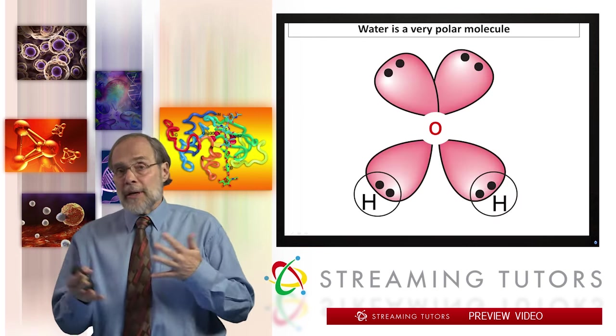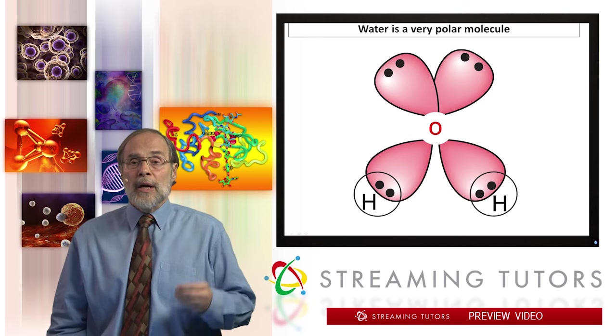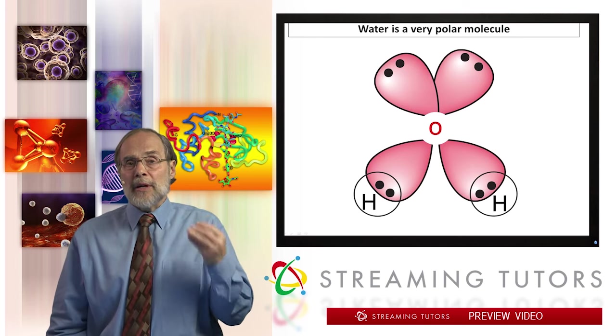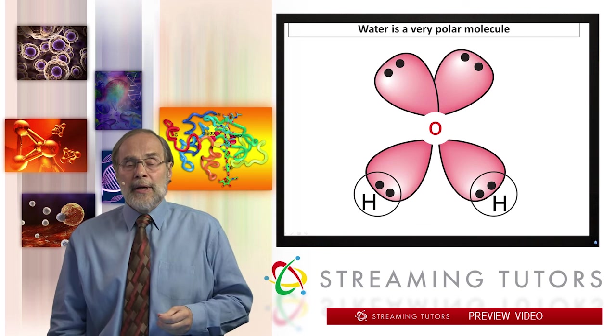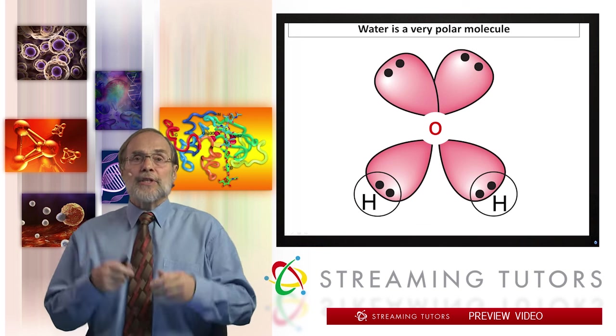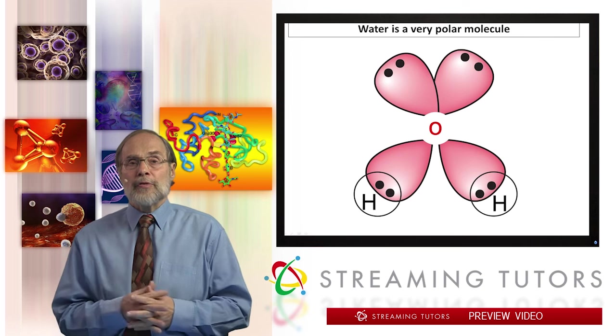So this is a step toward a ball and stick model. This is a water molecule with the electrons in the bonding, external bonding orbitals diagrammed. So there's six in the external orbitals of oxygen. So to create the magic number of eight, they can share one electron with each of two hydrogen atoms.